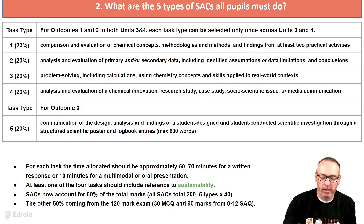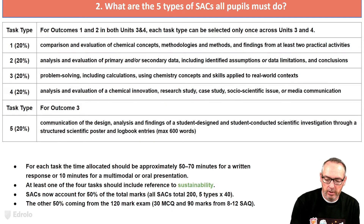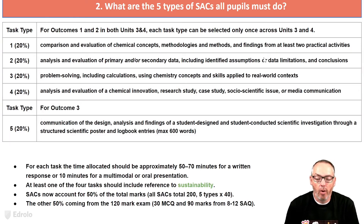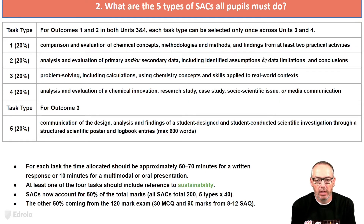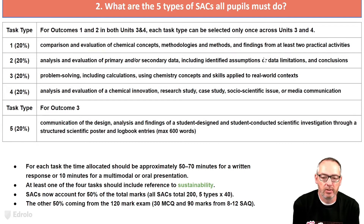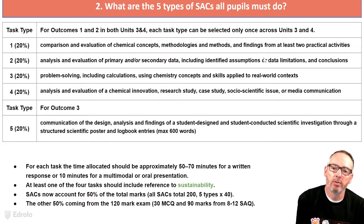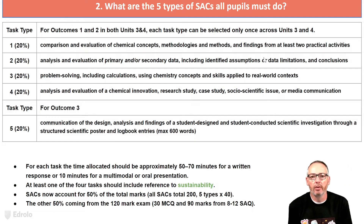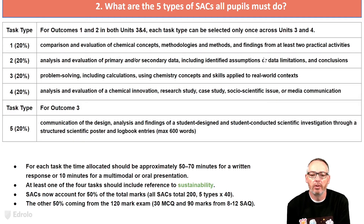Here is an overview of those types. In some instances you can see the word OR, so you don't always have to do all of them. If you look at task type 2, it says 'identified assumptions or data limitations.' So when you actually do a SAC, you don't necessarily need to cover all of those — you can choose specific components of it.